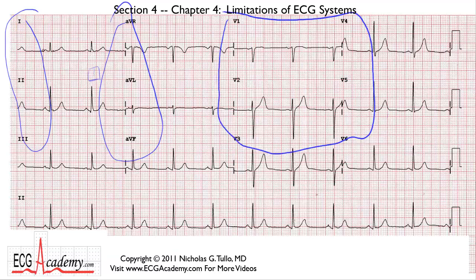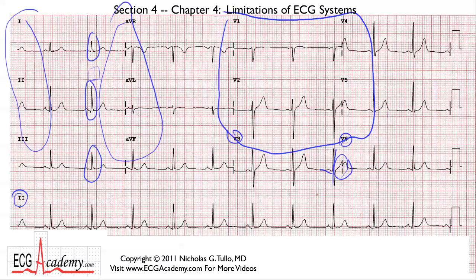What you have to understand is that these lines are all running simultaneously, so this beat is the same as this beat. Sometimes when the line changes from V3 over to V6, you can get some squiggles or weird signals. That's why the last line, the fourth line, is known as a rhythm strip — just one lead that runs all the way through the entire strip, so you can see very clearly what the rhythm is. This looks great, it's easy to interpret and very straightforward.